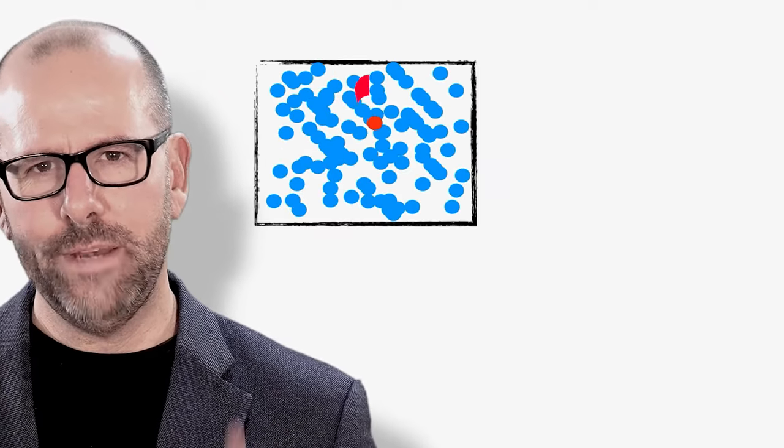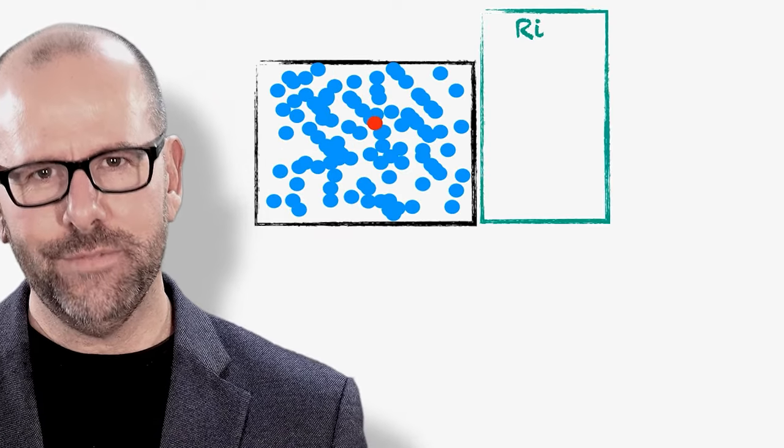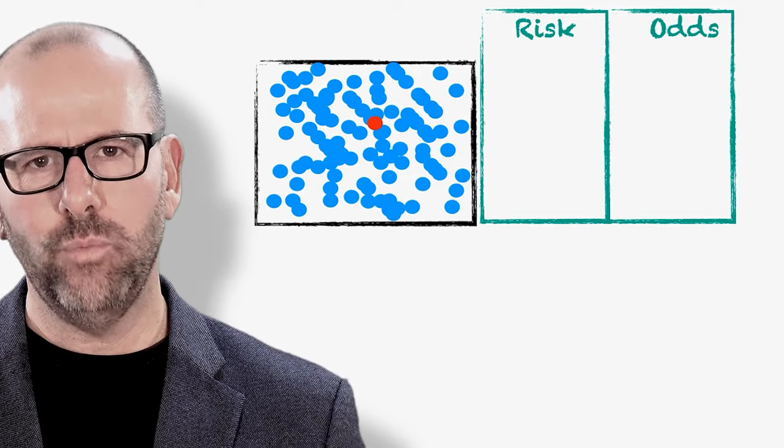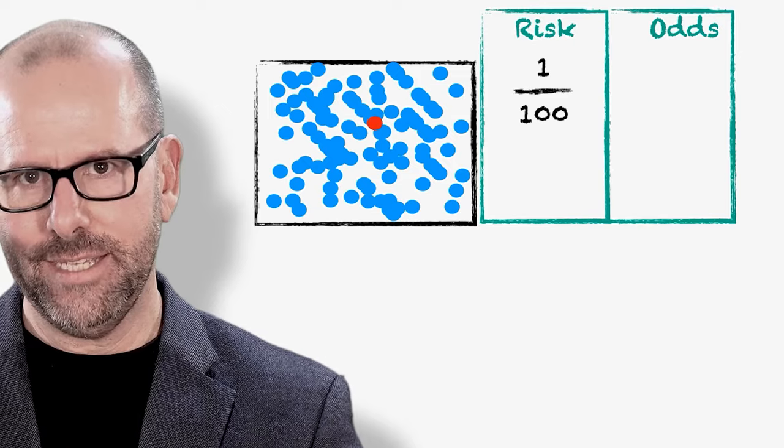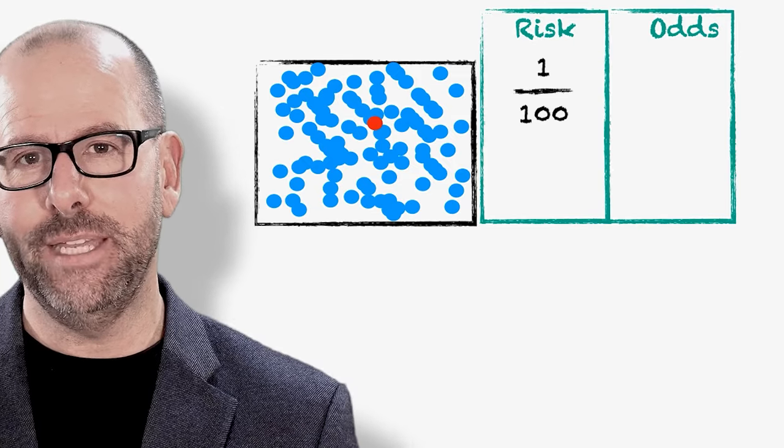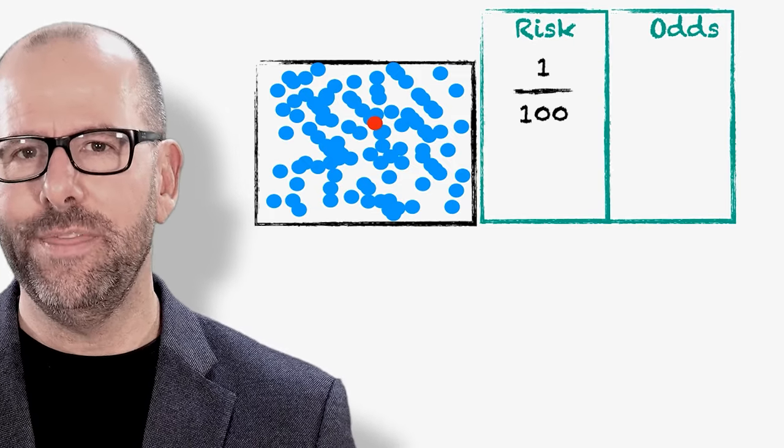Imagine that you've gone to the movies and there's a hundred people in the cinema. One person sneezes. The risk of sneezing in that time period is one over a hundred. The number of people that had the health outcome, in this case sneezing, over the number of people at risk at the beginning, which is a hundred. So it's one over a hundred. That's the risk of sneezing.